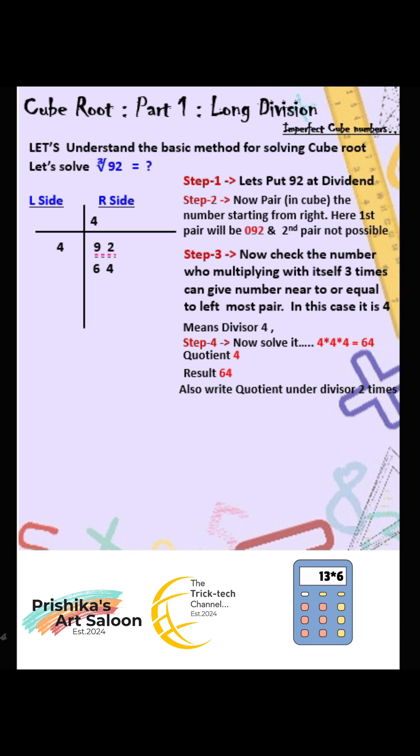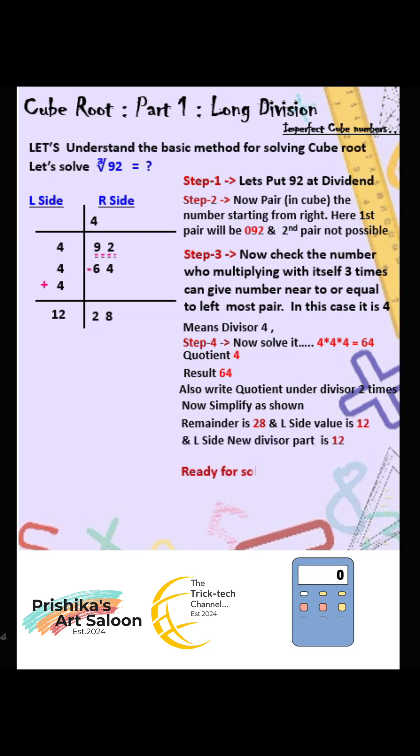Remainder is 28 and L side value is 12. So L side new divisor part is 12. Ready for solving two decimals. Now add zero in decimals up to three places after decimal.